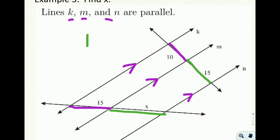So 15 over x, we said, is going to be equal to the purple ratio, 10 over 15. Notice that I did top over bottom, top over bottom. I kept my order consistent. Whenever you keep your order consistent, that's going to help you get your proportions right.